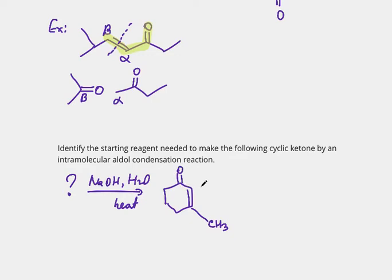The alpha carbon is next to the double bond=O, so I look at this double bond=O and identify the alpha carbon. There is also an alpha carbon on the other side, but I care about the one associated with the double bond in our pattern. Next, the beta carbon is right next to alpha — one carbon away from the double bond=O. My second step is to break through this bond between alpha and beta.